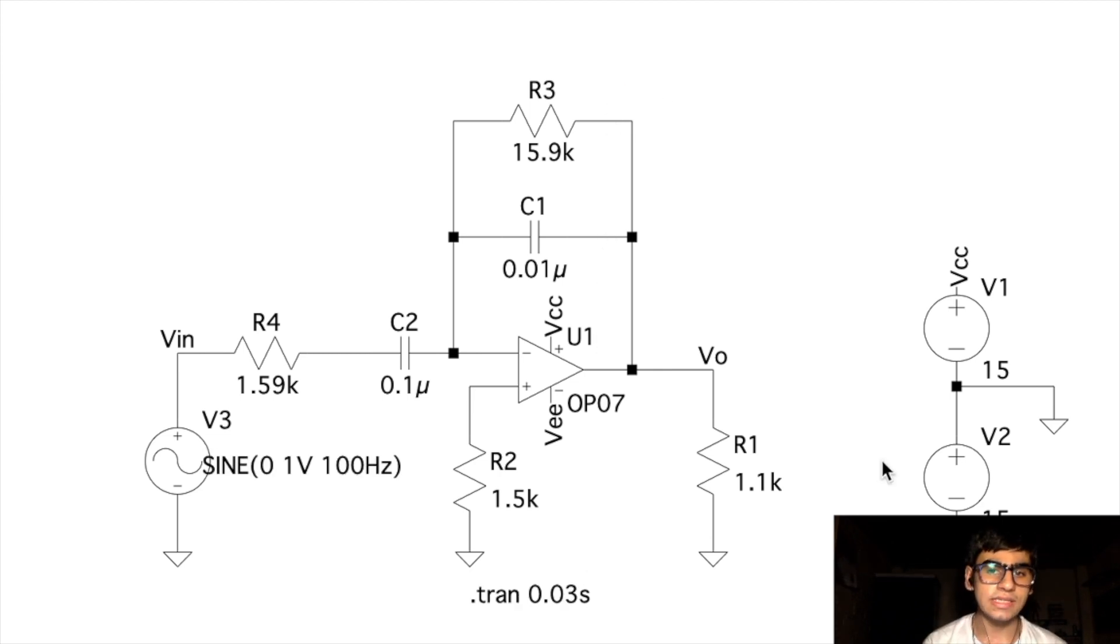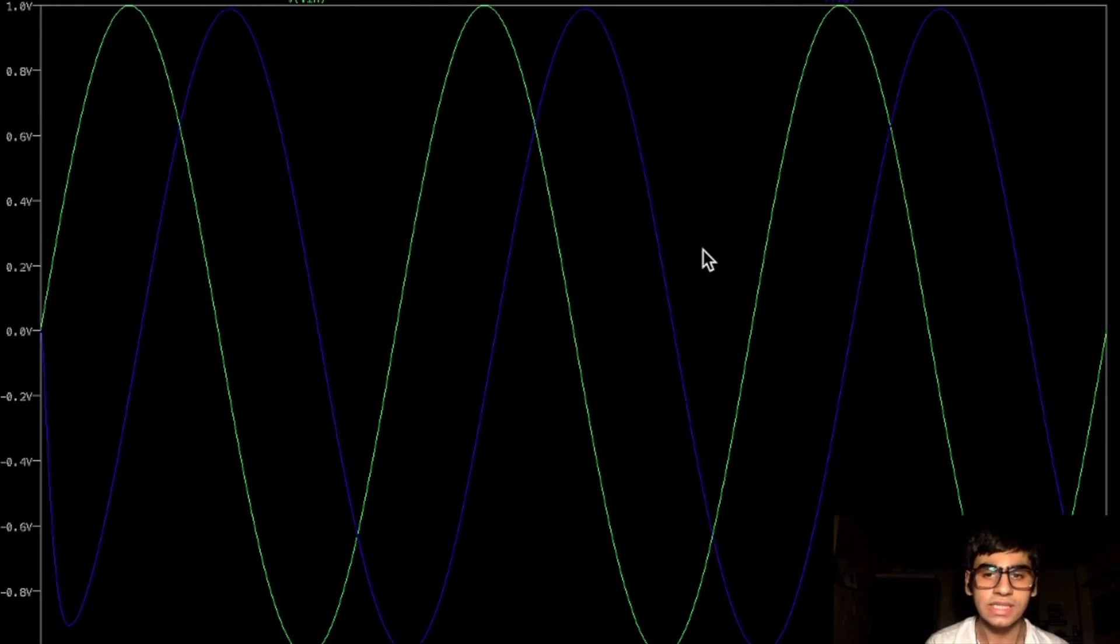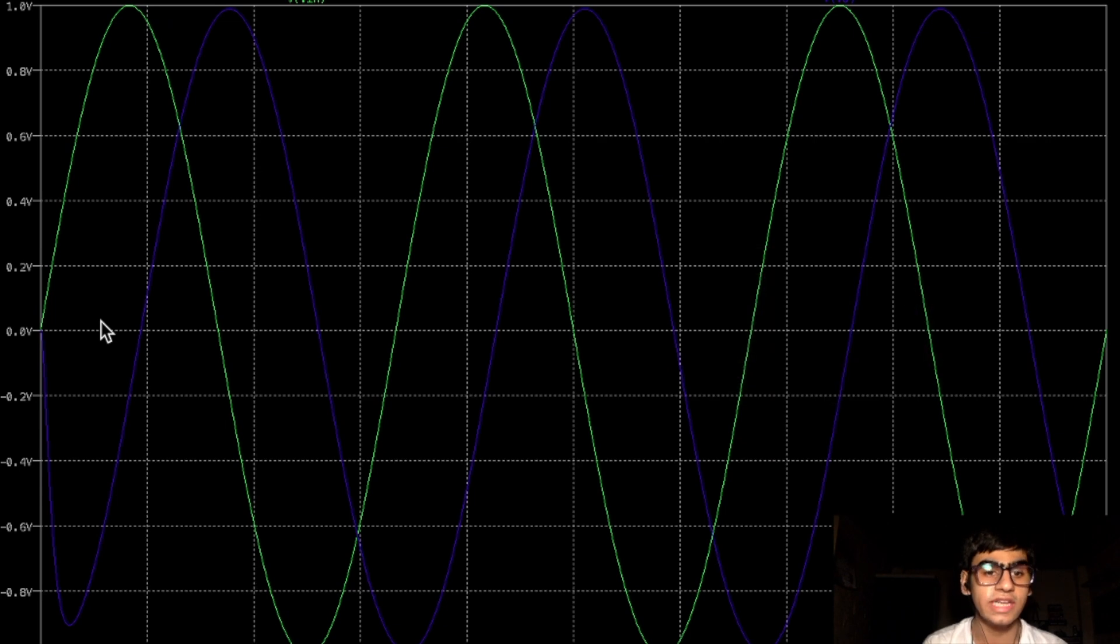Now moving on to the transient analysis for different input signals. First, we have a sinusoidal input signal. Here I have set the DC offset value 0, the amplitude as 1 volt and the frequency as 100 Hz. Then, using a transient analysis, if we run the simulation and probe the input and output, we get this result. Here we can see that the output in blue is approximately an inverted cosine wave, whereas the input is a sine wave. Thus, we can verify the fact that a differentiator output is basically the negative differentiation of the input signal.